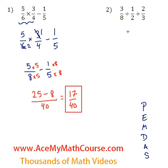Okay, so we have division and addition. Division comes before addition. So when we're dividing fractions we can just flip and multiply by the reciprocal. So 3 over 8 divided by half is 3 over 8 times 2 over 1.